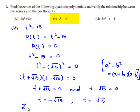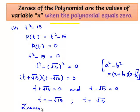Therefore, the zeros of the polynomial are ±√15.